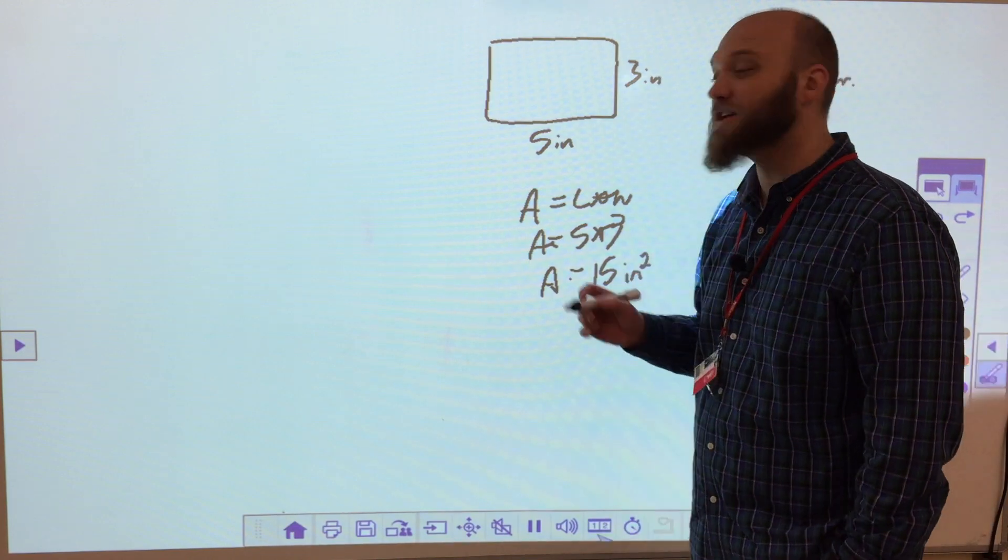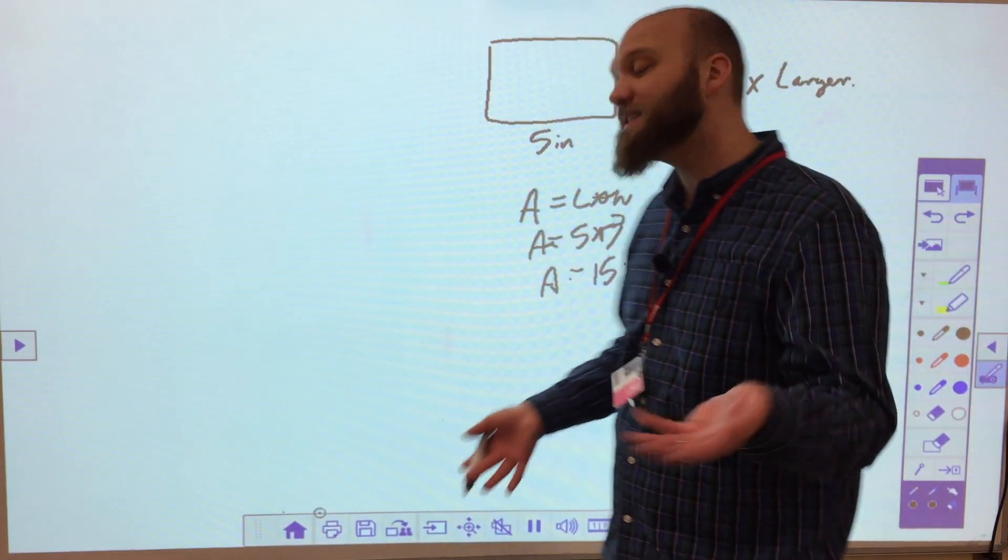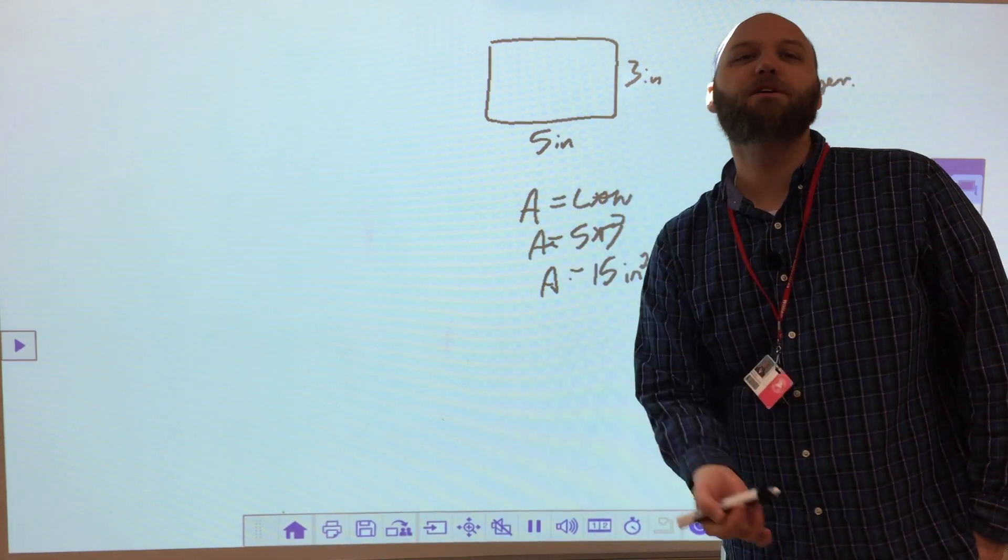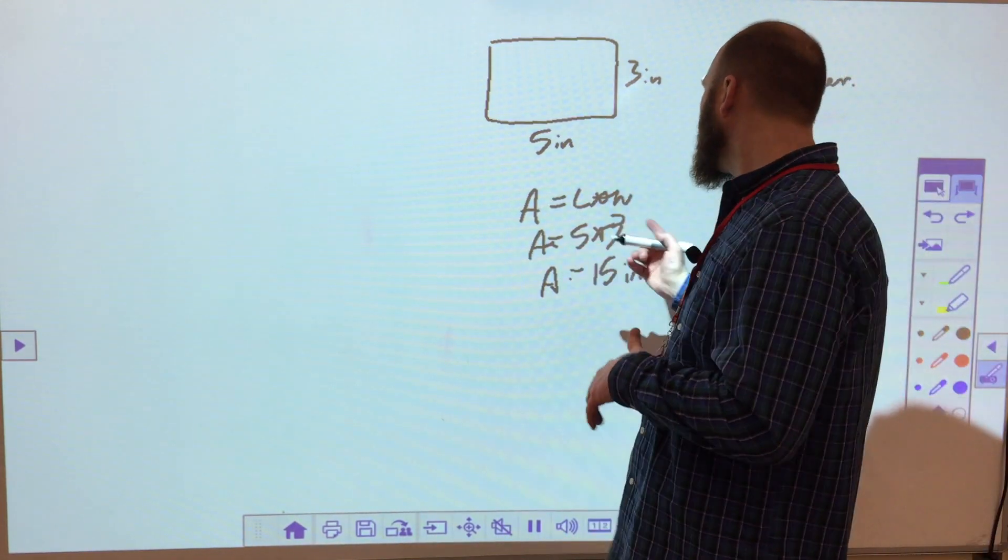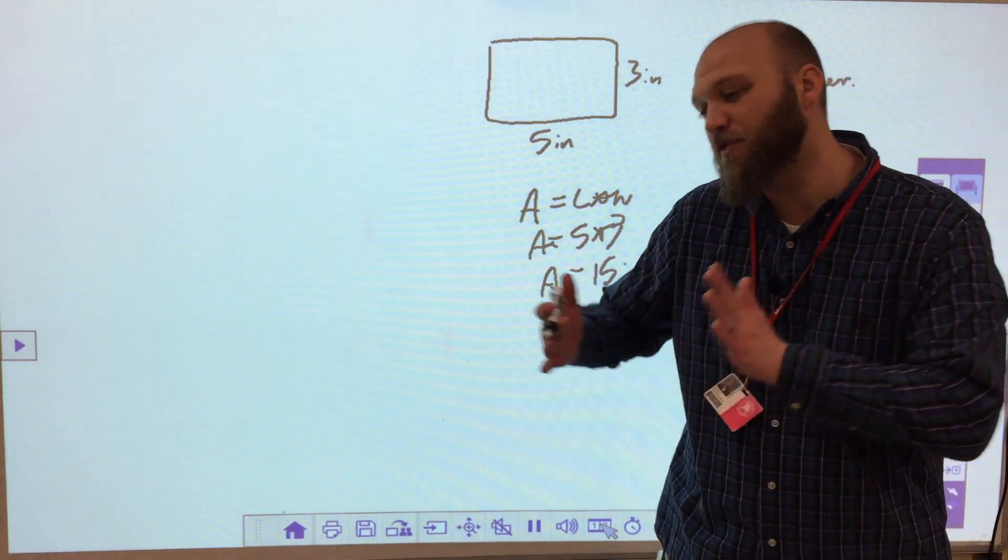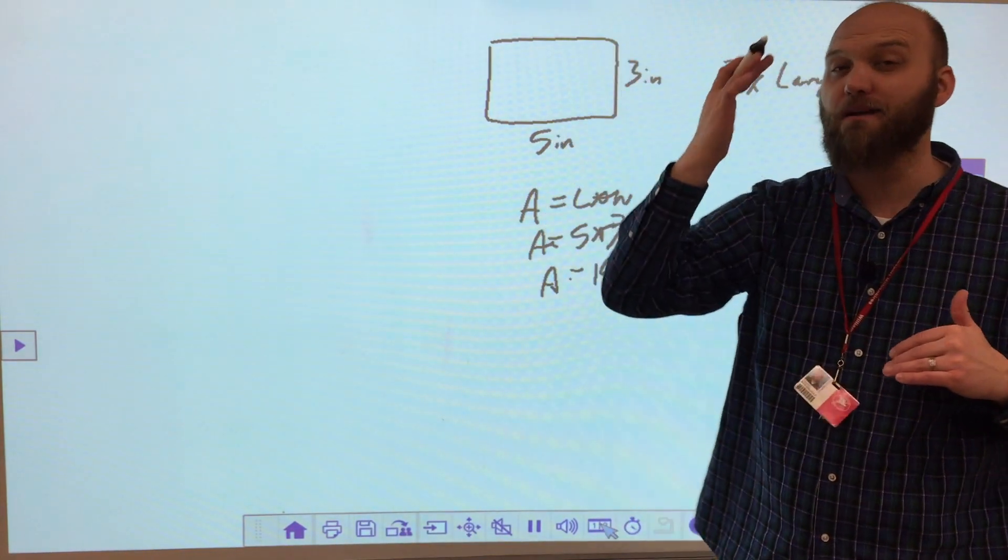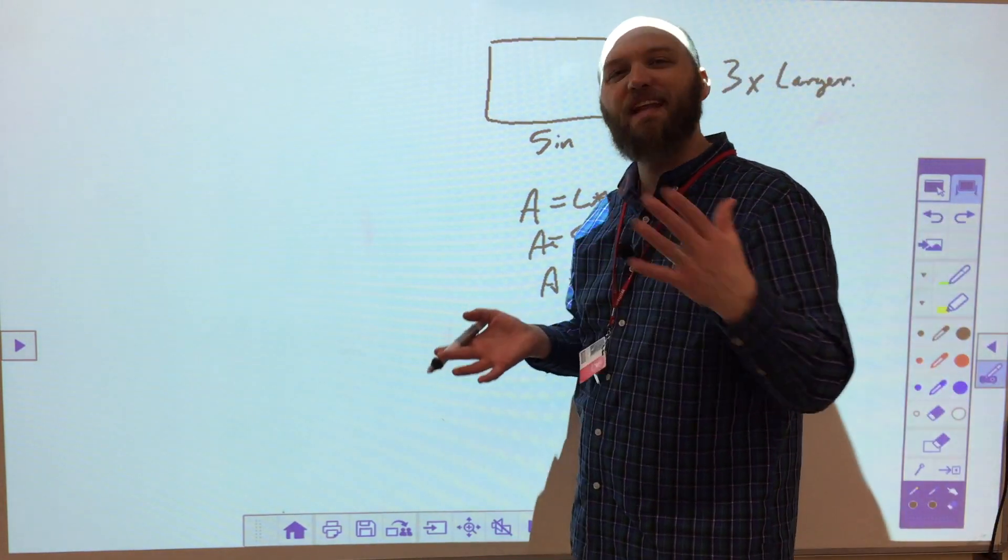Now you can say, well it's three times larger that should be 45, right? 15 times three is 45. But don't jump to conclusions because this is squared, which means it's gonna be three times larger, three times longer, and three times higher.